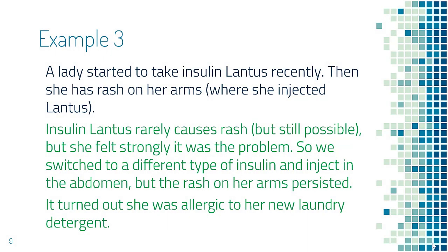The next example is a lady who started to take insulin Lantus recently and she had a rash on her arms. Rash is not a common side effect of Lantus, so Lantus is unlikely the cause of her rash. However, she still felt strongly that Lantus was the problem because she injected Lantus on her arms. We switched to a different type of insulin and injected it in her abdomen, but the rash on the arms persisted. So Lantus should not be the problem here. Then she remembered that her laundry detergent was something new, so she stopped it — and it turned out that she was allergic to her new laundry detergent.